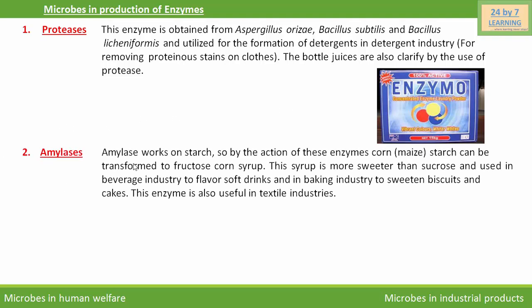The next enzyme is amylase, which works on starch. By the action of these enzymes, corn starch can be transformed into fructose corn syrup. This syrup is sweeter than sucrose and is used in the beverage industry to flavor soft drinks, in the baking industry to sweeten biscuits and cakes, and also in textile industries.